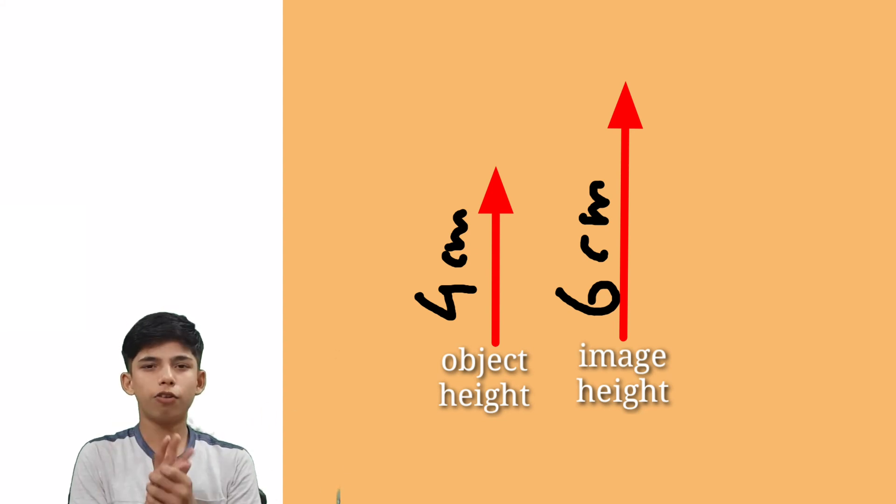By the way, right now just forgot about that minus sign. We have 4 and we have 6. Here we can clearly see that image is enlarged. Image is greater than the object. That was the first thing.